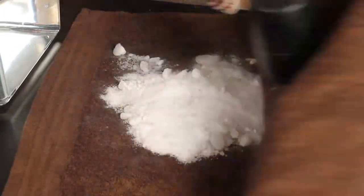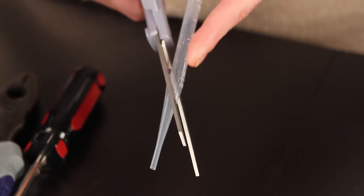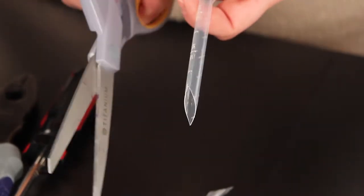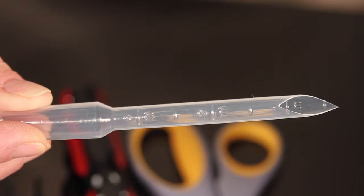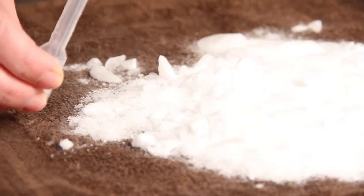Break up the dry ice to make it easier to add to the pipette. Cut the end of the pipette off at an angle to make scooping the dry ice easier. Scoop some dry ice into the pipette and pack it down.